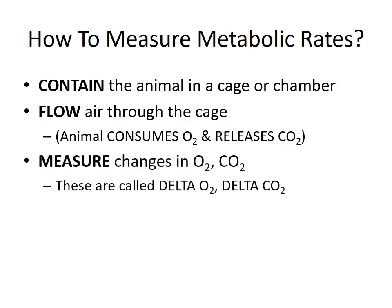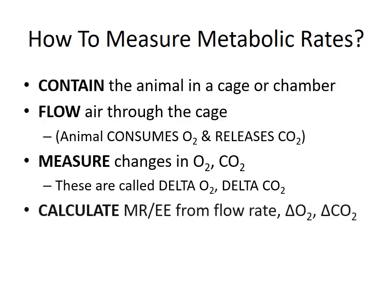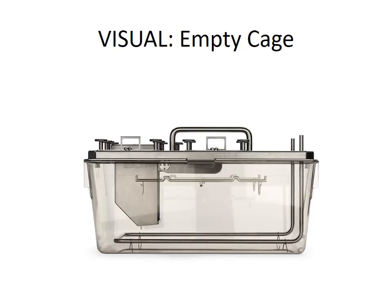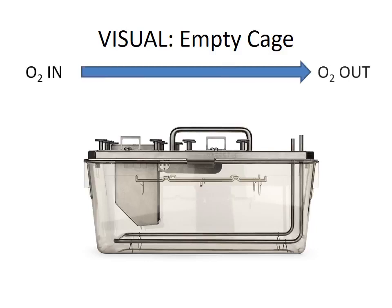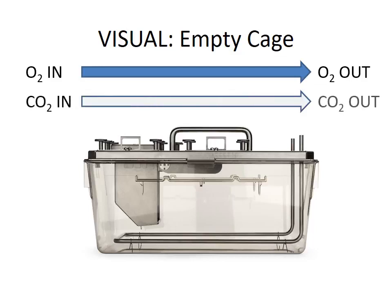So we can now measure those changes that the animal produces in oxygen and CO2, and these changes are called delta-O2 and delta-CO2. Then we can calculate the metabolic rate and energy expenditure from the flow rate going through the cage and from the delta-O2 and delta-CO2. Let's just imagine an empty cage — we're flowing air into it, and the oxygen going in is exactly the same as the oxygen coming out. The CO2 going in is the same as the CO2 coming out, so the delta-O2 and delta-CO2 are zero.